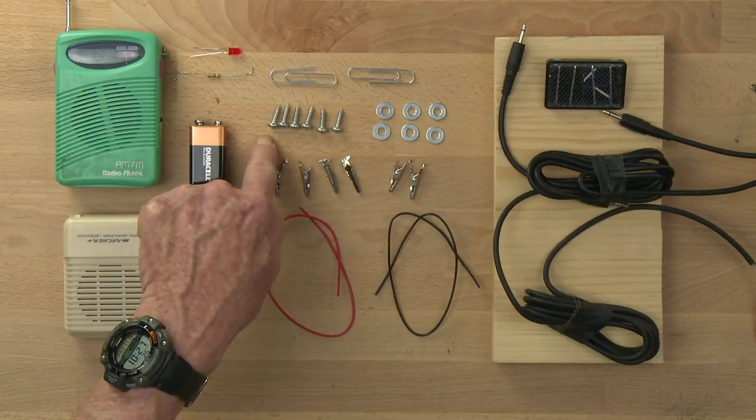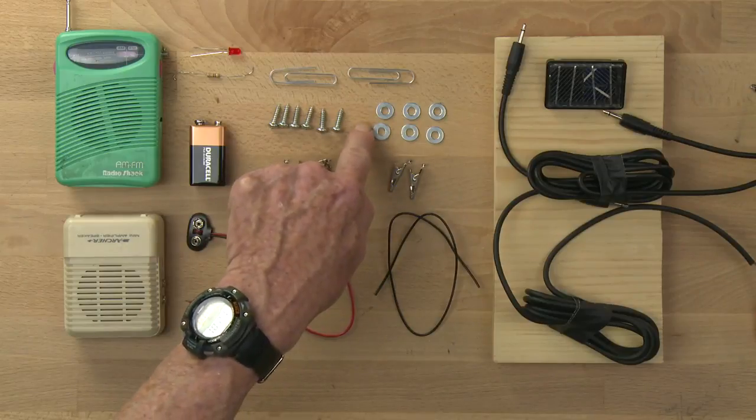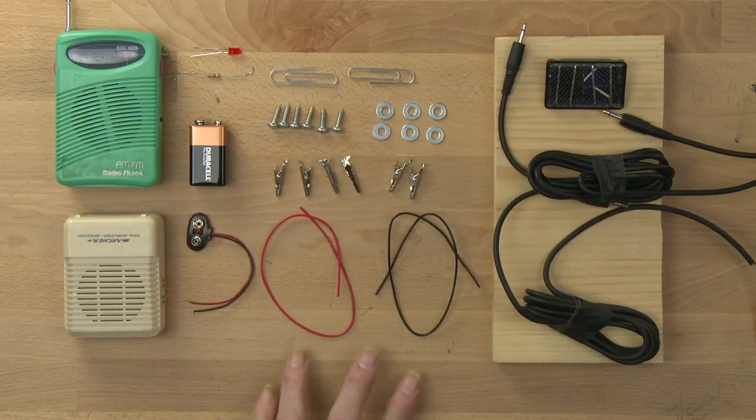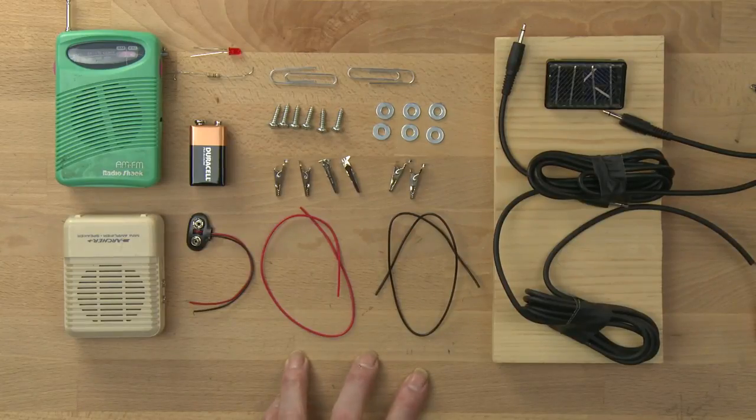You'll need six machine screws and six washers. You'll need six alligator clips. You'll need a little over a foot of 22-gauge insulated wire.